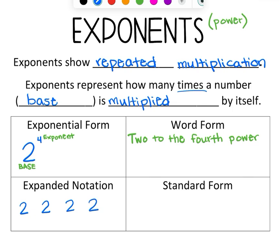I'll write it 4 times. And then we multiply. So I'm going to put a dot in the middle. And that is multiplication, 2 times 2 times 2 times 2. That is expanded notation. Now the standard form, that is just our answer.